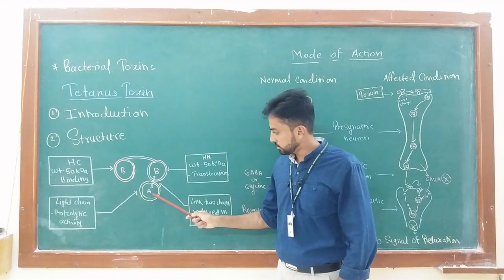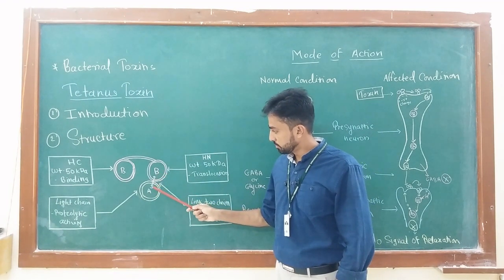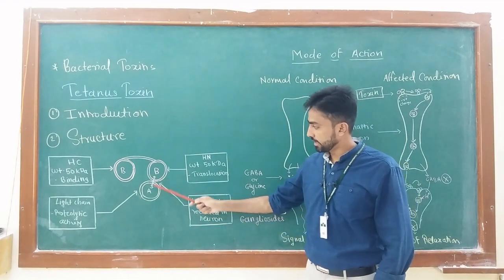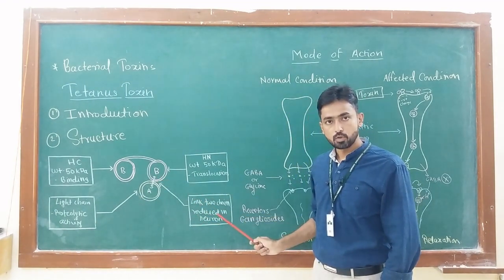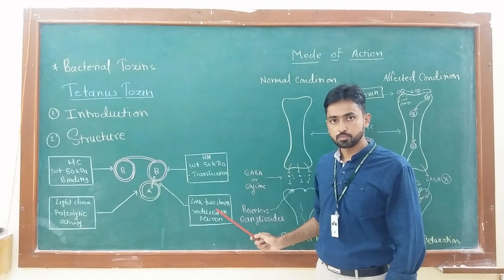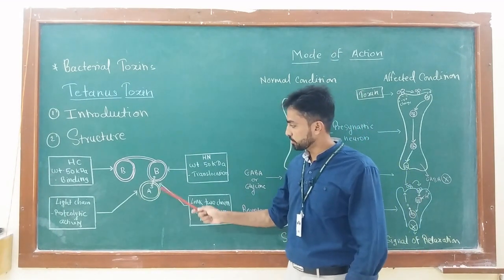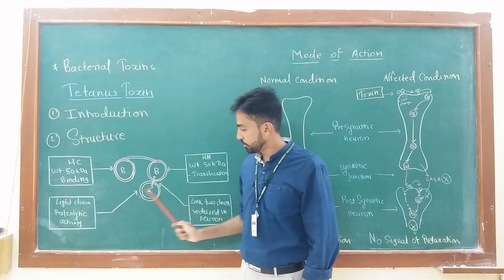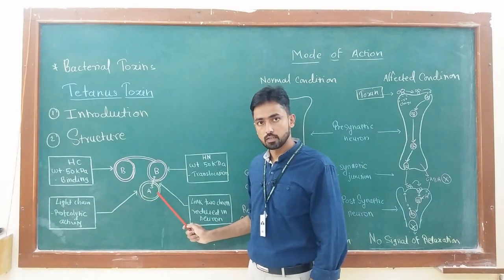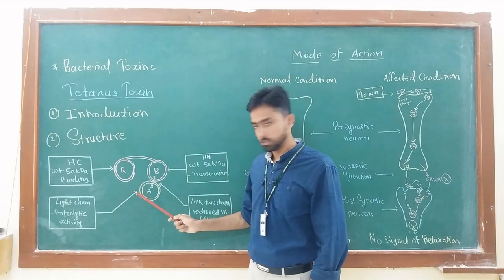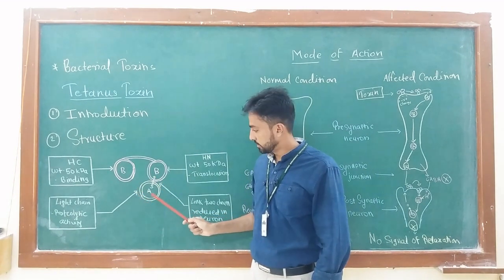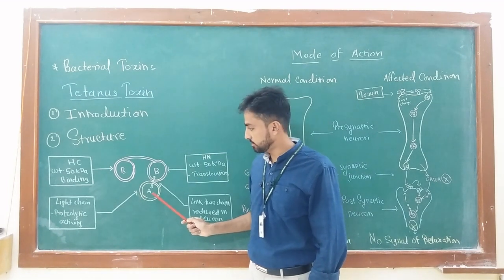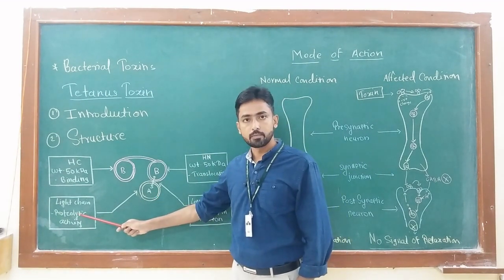The A subunit is attached to the B subunit by a disulfide bond, and this disulfide bond gets reduced inside the neurons at the time of action of this toxin. The last part of the toxin is the A part or A subunit. It is called the light chain with molecular weight 50 kilodaltons. And the actual toxicity of this tetanus toxin is related to the A part or A subunit of this toxin, because this A subunit has proteolytic activity.